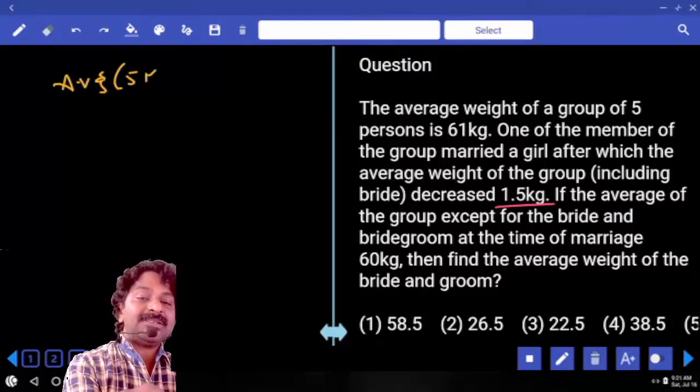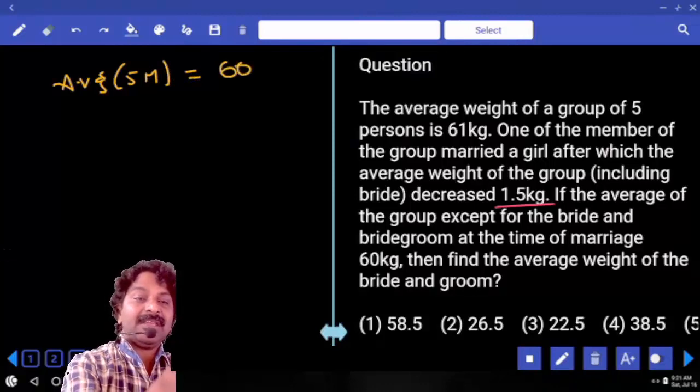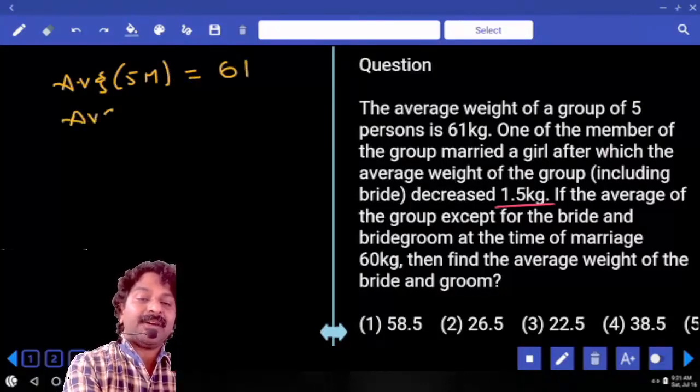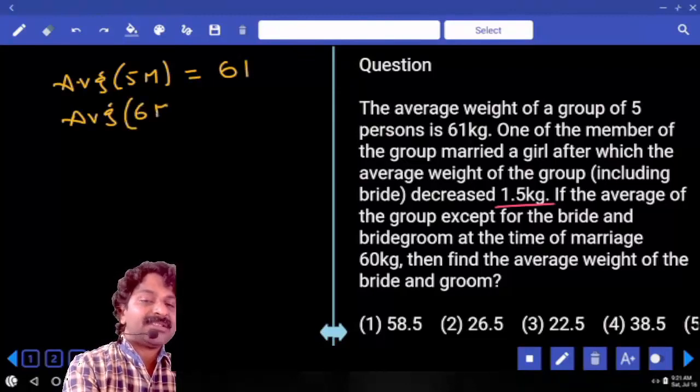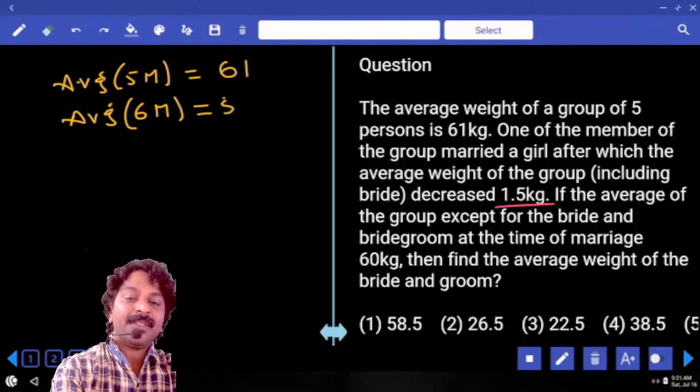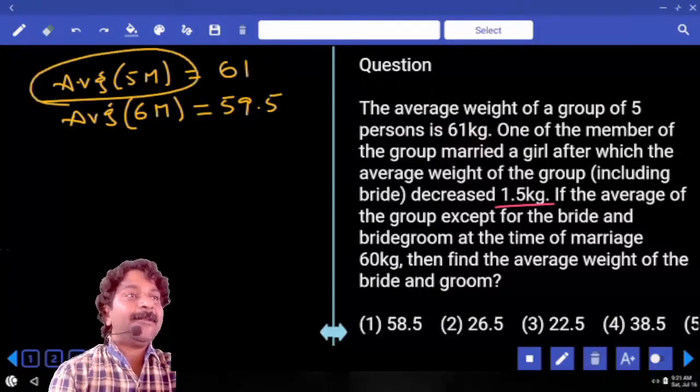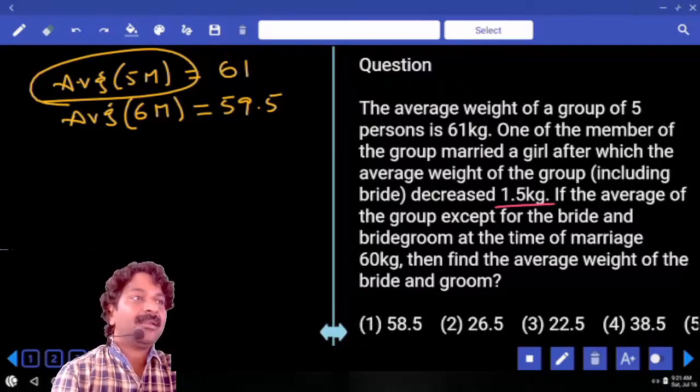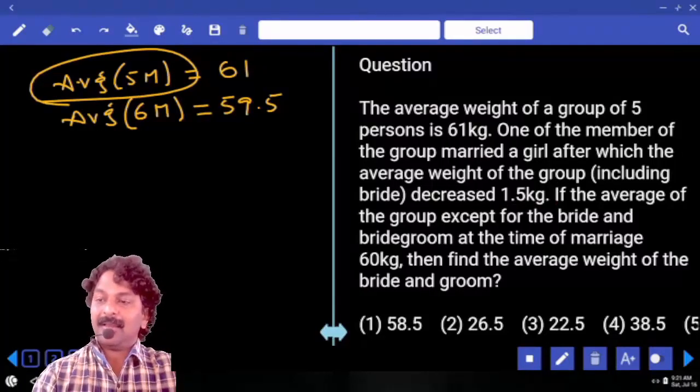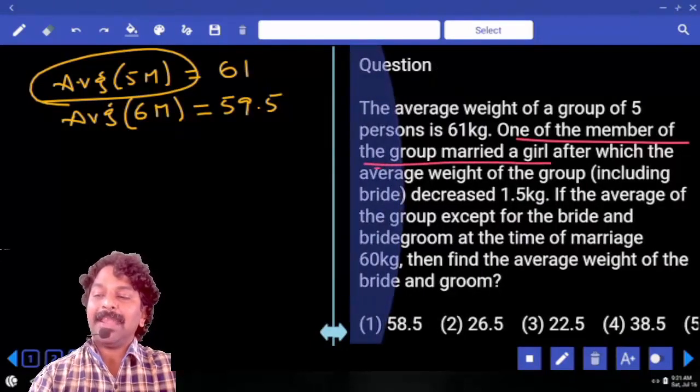So the average for five members is 61. I am just writing for the sake of your understanding. Average for six members decreased by one and a half, that becomes 59.5. Clear? So in five members, one member of the group married a girl.